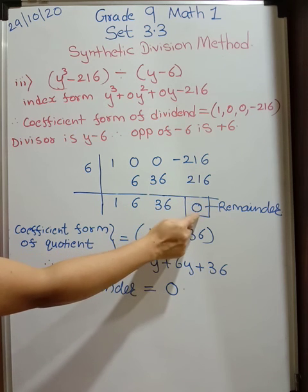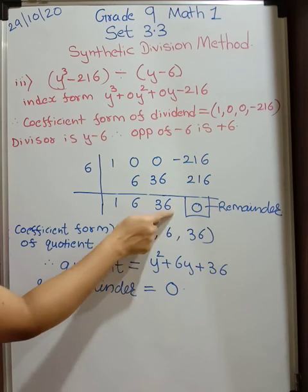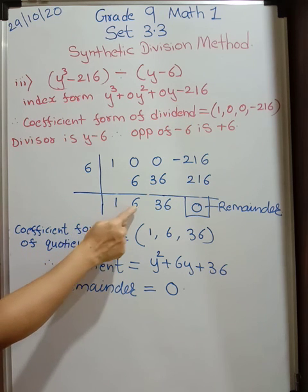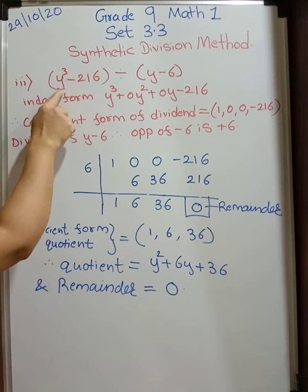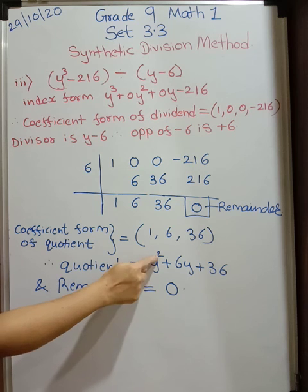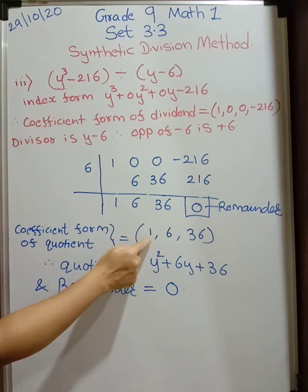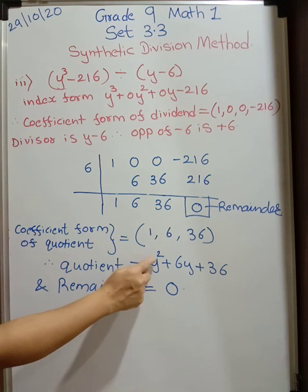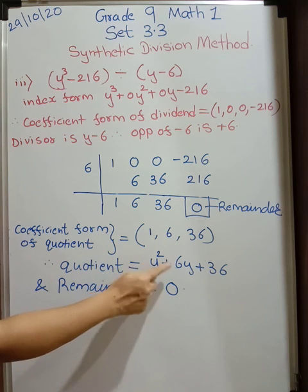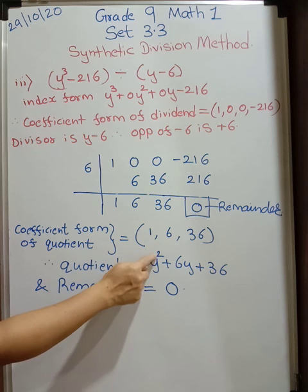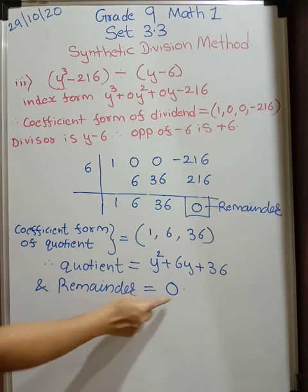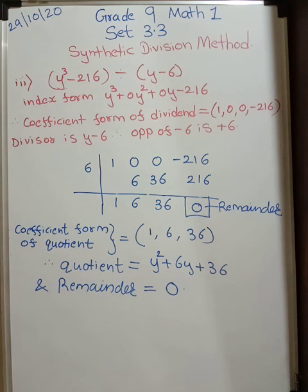Immediately last number what you get is remainder. So this belongs to quotient. So coefficient form of quotient is 1, 6, 36. What is the letter? Variable y. So y is the variable. Let us decide what will be the index of y. How many terms are there? Numbers 1, 2, 3. 3 minus 1, 2. So y raised to 2 plus. So this is y raised to 2 plus 6y plus 36. This is your quotient and remainder will be 0.